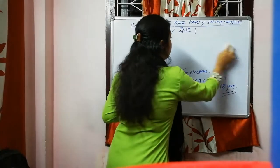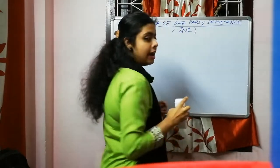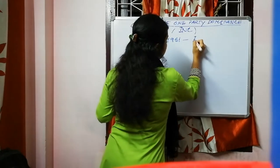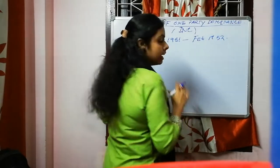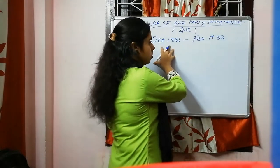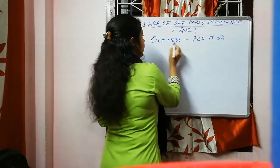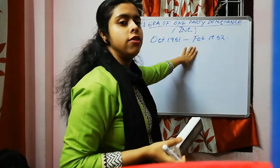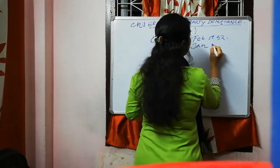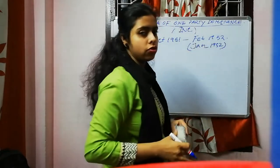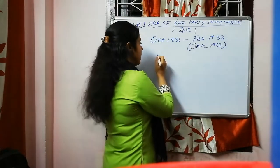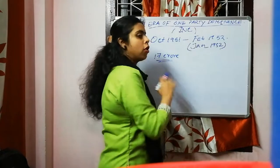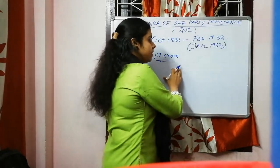Despite these concerns, from October 1951 to February 1952 the election was conducted. It is still called the 1952 General Election, or the first election in India, because most people voted in January 1952. From those 17 crore eligible voters, more than half participated in the election process. The election was also very competitive.